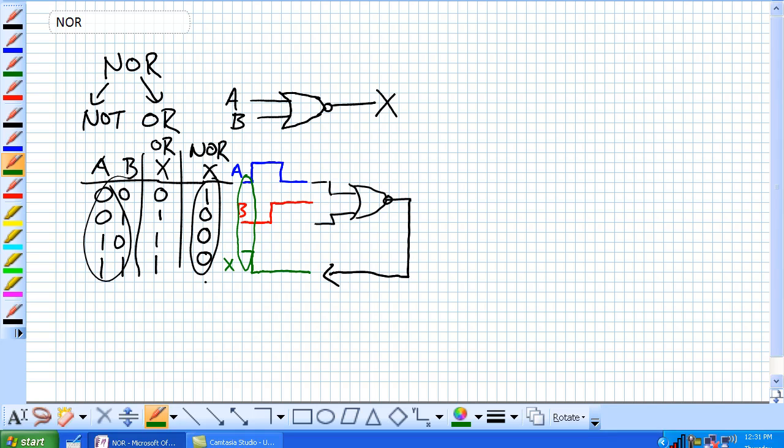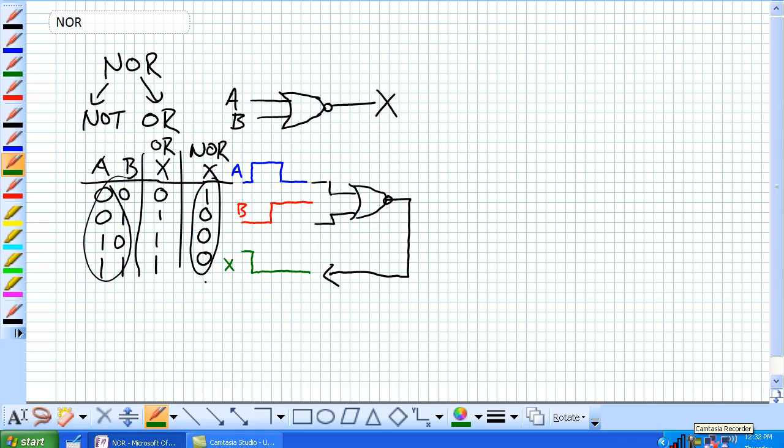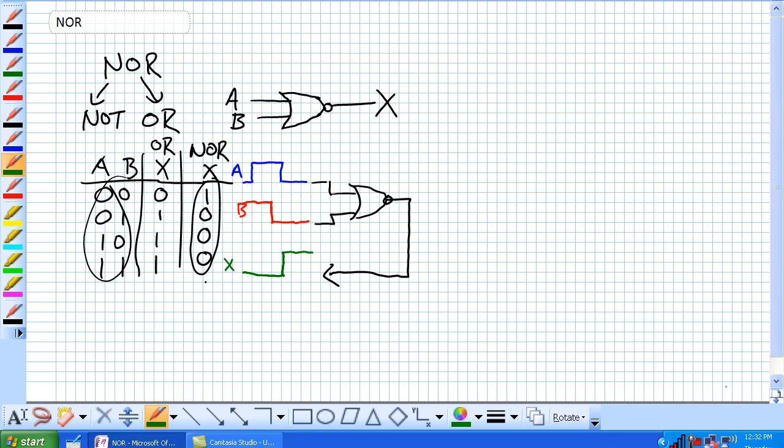Let's invert signal B and see what happens. That's what we get right there, because the only time that A and B are simultaneously low is right here, it gives us a high output. So again, NOT OR contracted into NOR.